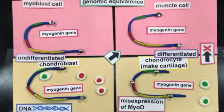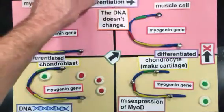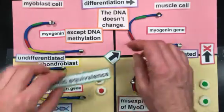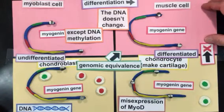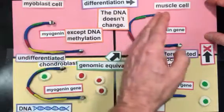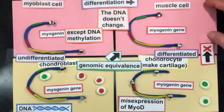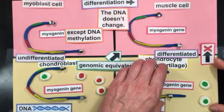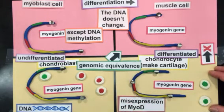Although the DNA doesn't change during differentiation, DNA methylation patterns do. Differentiated cells still have genomic equivalence — meaning the muscle cell has the genes to make cartilage, but it's not using them. It's thought that during differentiation, cells methylate genes they're not going to need and repress their expression. That's what happens here, where during chondrocyte differentiation, a gene like MyoGenin that's no longer important will get methylated and repressed.